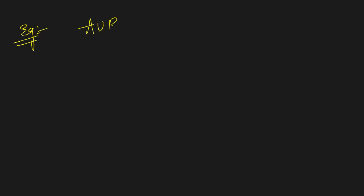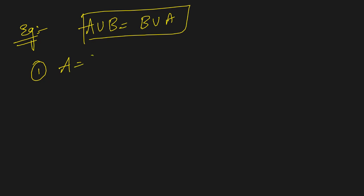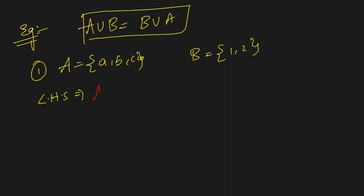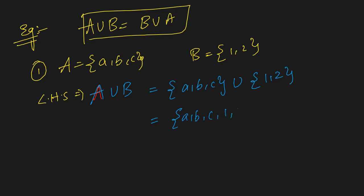This is the proof of the first commutative law. Let us see one example for better understanding. The formula is: A union B equals B union A. Let us take set A as {a, b, c} and set B as {1, 2}. The left-hand side is A union B — we take all elements from set A as well as from set B, which gives us {a, b, c, 1, 2}.